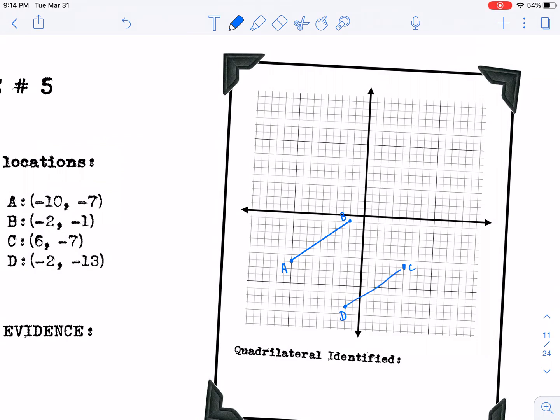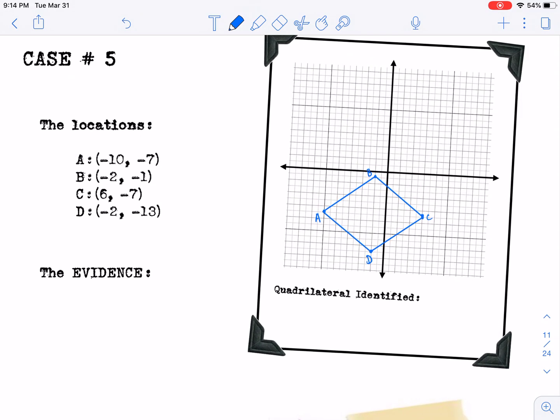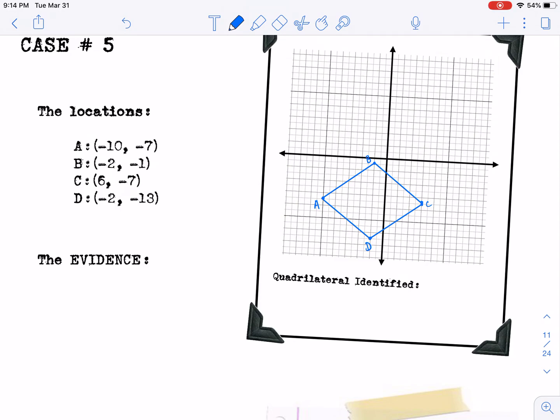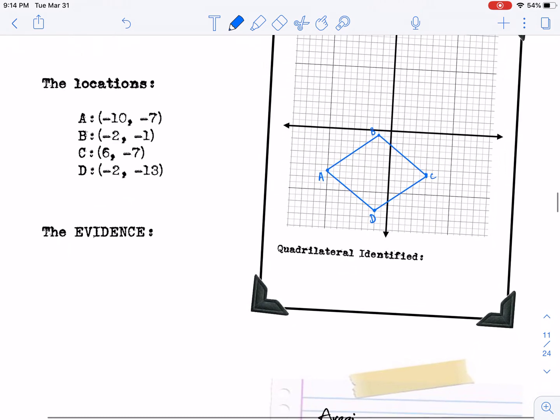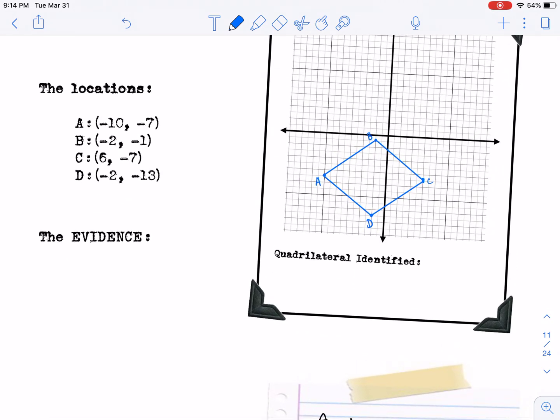And a lot of times you have a hunch as to what it is when you graph it. So I'm thinking that this looks like a rhombus. So in order to prove that it's a rhombus, I can do one of at least two different things. Rhombuses have all four sides congruent, so I could do the distance formula for all four sides.